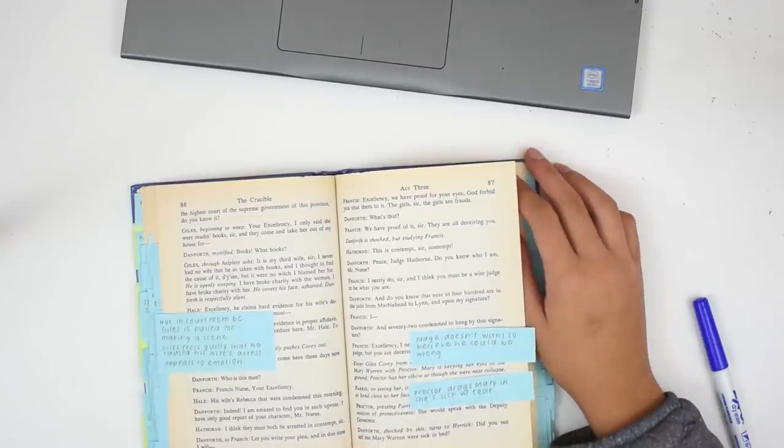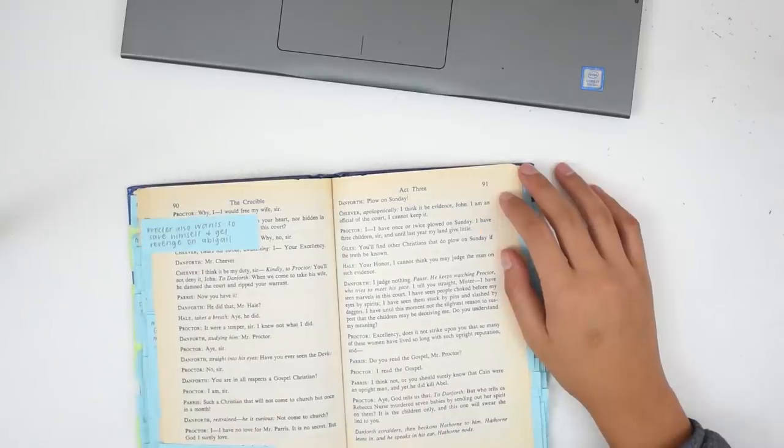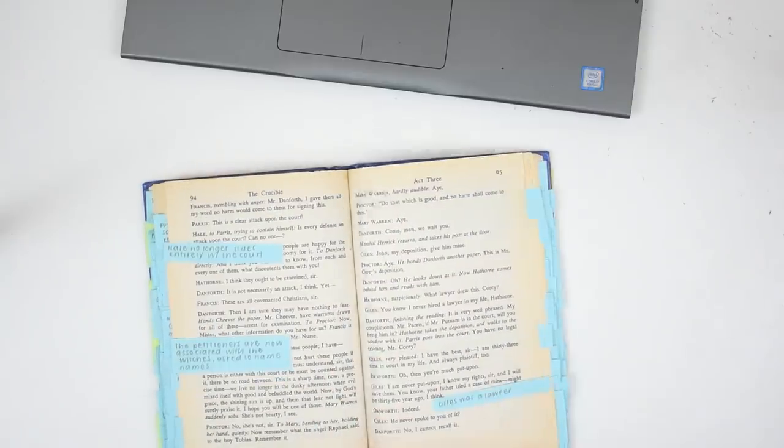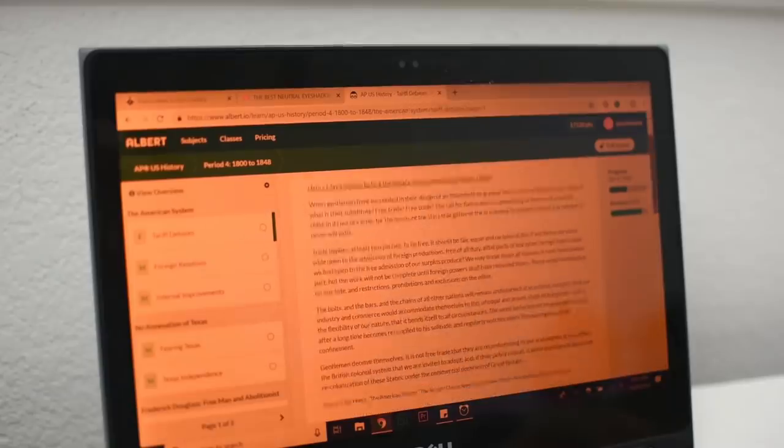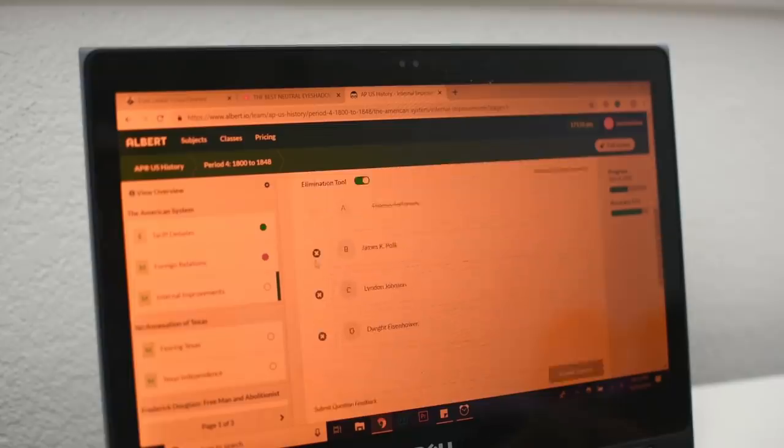And now moving on, I am attempting to study for a quiz on The Crucible, which is the play we're reading in English, by flipping through the annotations I made. But I honestly don't really know how to study for English, so if you have tips, please leave them in the comments. It would be very greatly appreciated.